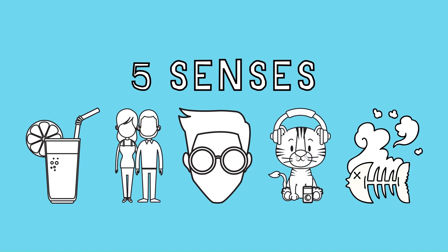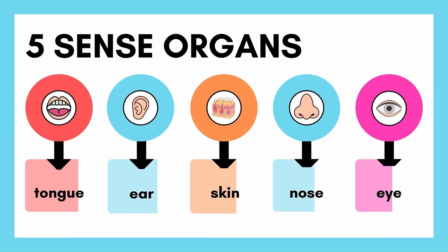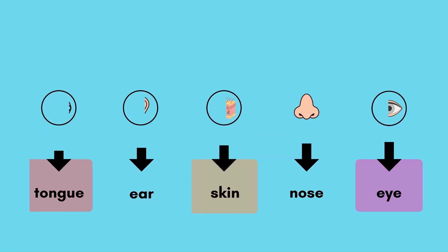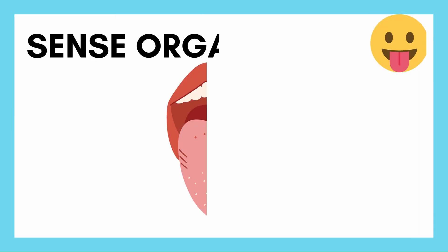In today's video, let's talk about our 5 senses. Can you see the pictures? Our 5 sense organs comprise of the tongue, ear, skin, nose, and eye.